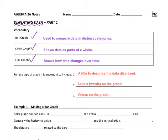In the vocabulary section, it says that a bar graph is used to compare data in distinct categories. A circle graph is going to show data as parts of a whole.